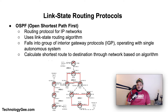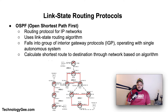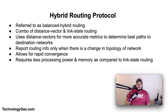A type of link state routing protocol is OSPF, or Open Shortest Path First. OSPF is a routing protocol for internet protocol networks. It uses a link state routing algorithm and falls into the group of interior gateway protocols, operating within a single autonomous system. Routing protocols like OSPF calculate the shortest route to a destination through the network based on an algorithm.